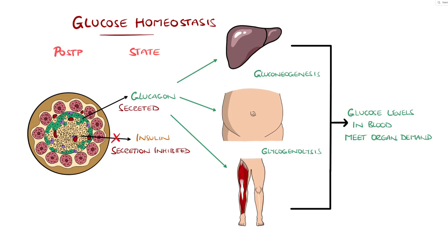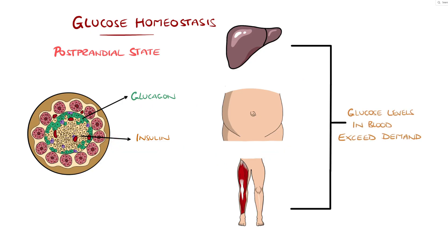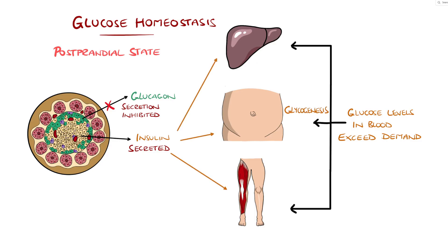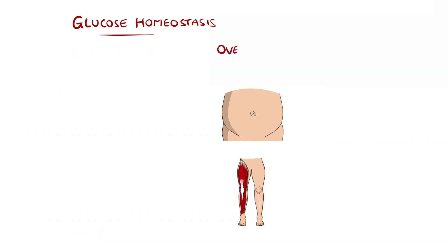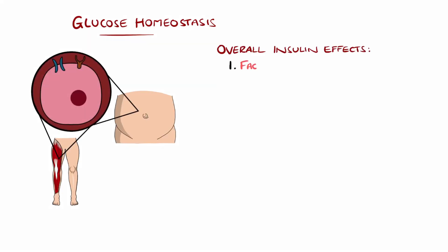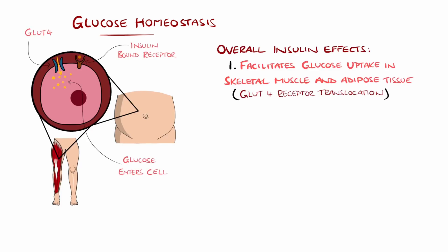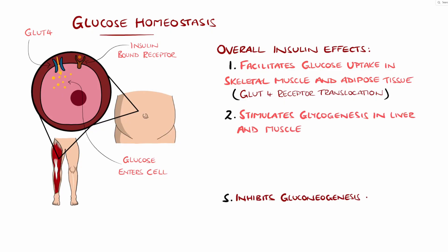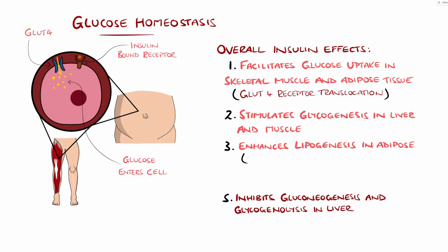Post-prandially, rising glucose levels in the blood trigger insulin release from the beta cells, with insulin ultimately serving to reduce glucose levels and promote nutrient storage. More specifically, the effects of insulin include increased glucose uptake in muscle and adipose tissue via GLUT4 transporter translocation. It stimulates glycogenesis in liver and muscle, which is the conversion of glucose to glycogen, the body's stored form of glucose. It inhibits gluconeogenesis and glycogenolysis in the liver. It enhances lipogenesis, meaning fat synthesis, and inhibits lipolysis, meaning fat breakdown in adipose tissue.